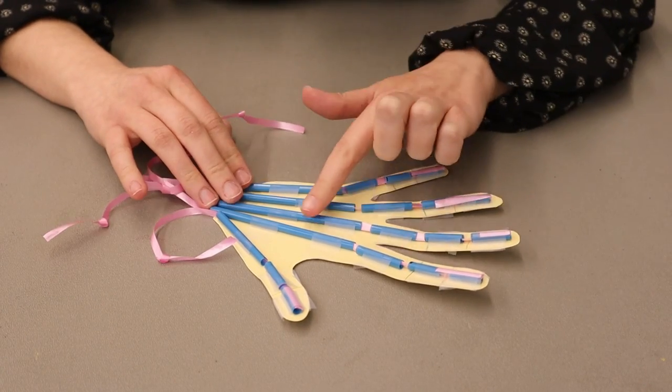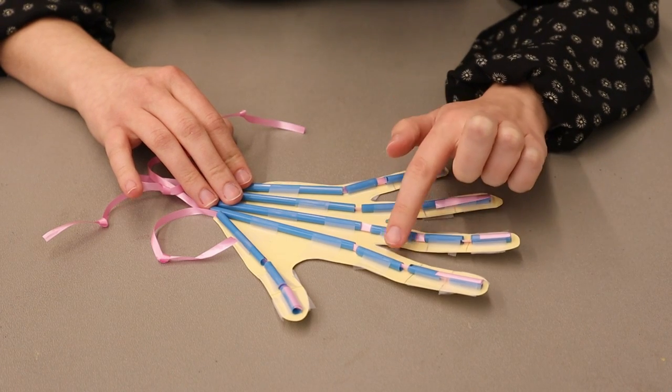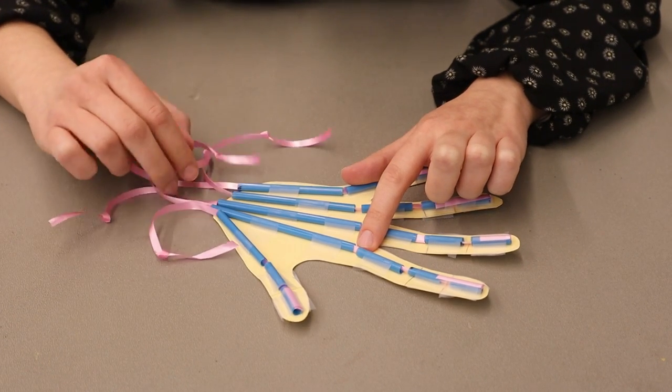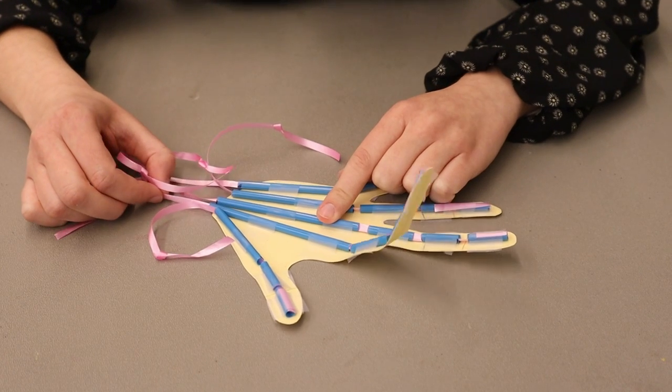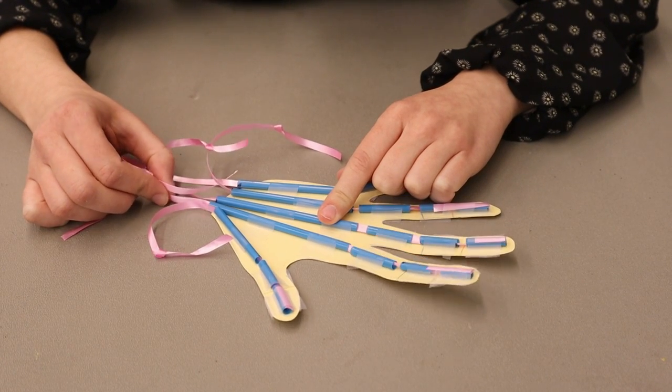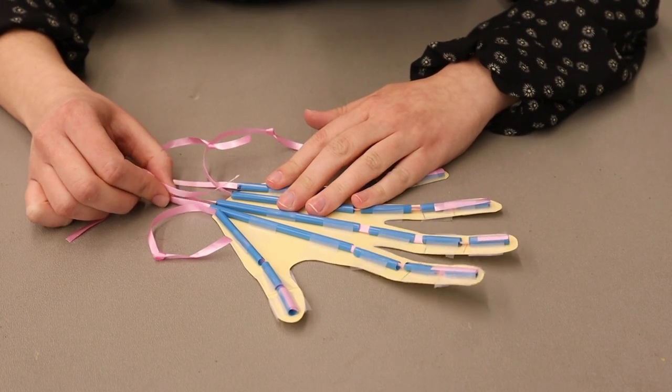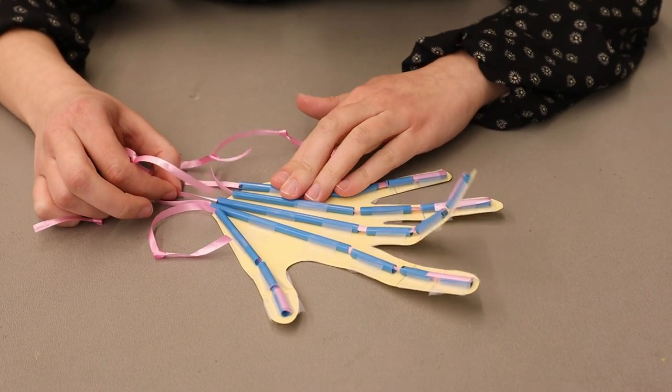The bones, or straws, create structure for our fingers, and the ribbon, or tendons, help our finger move by connecting the bones together. And also creating space, so our fingers can bend. Isn't that so fun?